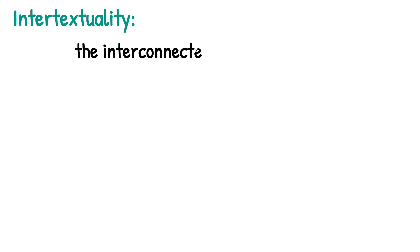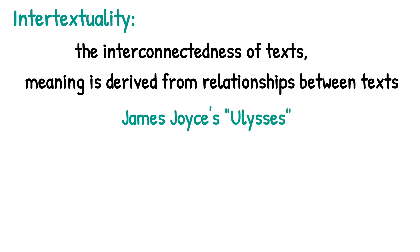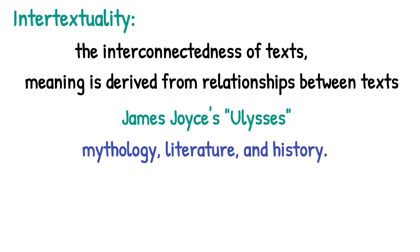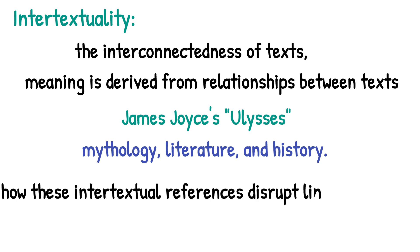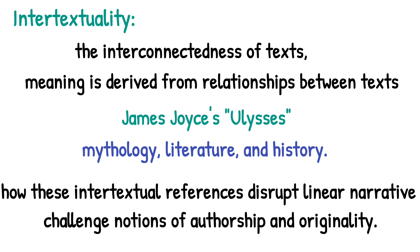Intertextuality. Post-structuralists emphasize the interconnectedness of texts, arguing that meaning is derived from relationships between texts rather than inherent in individual works. Example: James Joyce's Ulysses is rich with intertextuality, referencing mythology, literature, and history. A post-structuralist reading would explore how these intertextual references disrupt linear narrative and challenge notions of authorship and originality.